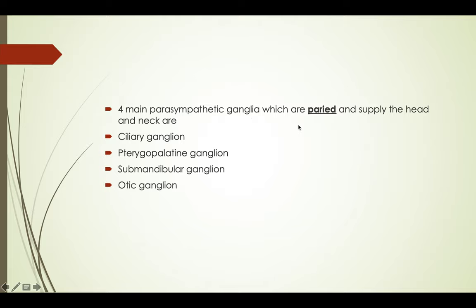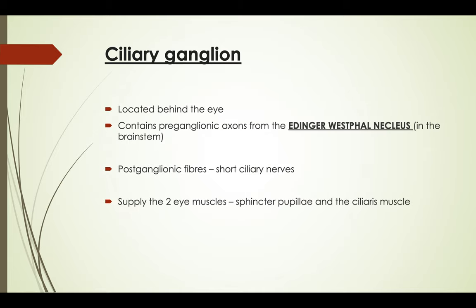There are four main paired ganglia that supply the head and neck region: the ciliary ganglion, the pterygopalatine ganglion, the submandibular ganglion, and the otic ganglion. The ciliary ganglion is located behind the eye. It contains pre-ganglionic axons from the Edinger-Westphal nucleus, which is present in the brainstem. The post-ganglionic fibers travel via the short ciliary nerves and supply two muscles of the eye: the sphincter pupillae and the ciliaris muscle.